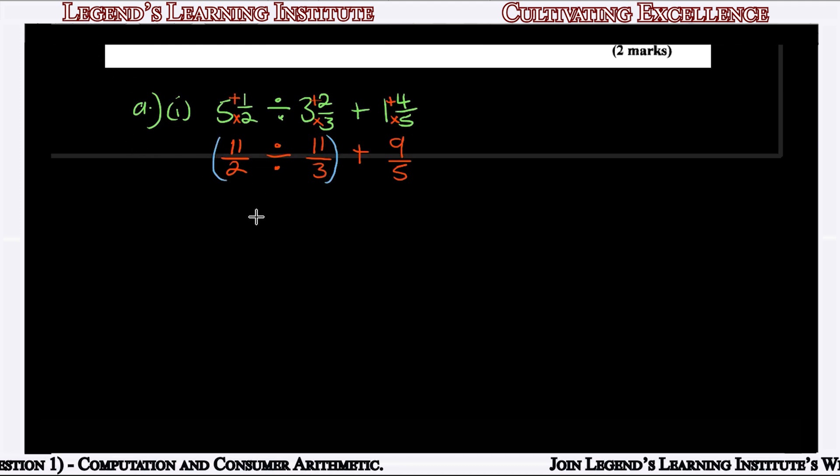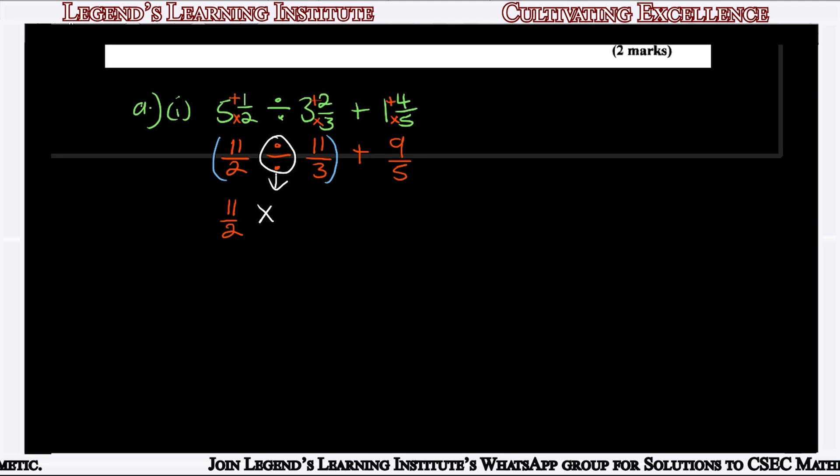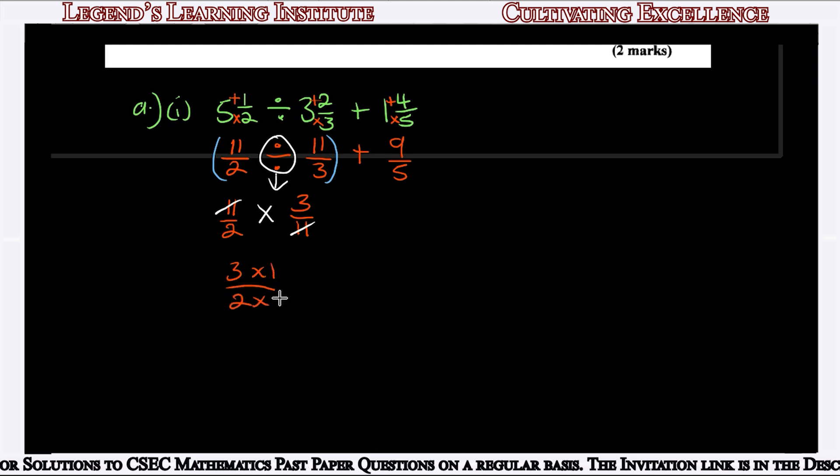Following the order of operations BODMAS, we divide before we add, so we start with 11/2 divided by 11/3. When dividing fractions, change the division sign to multiplication and flip the second fraction. So we get 11/2 multiplied by 3/11. Cross cancelling, the 11s cancel out, giving us 3 times 1 over 2 times 1, which is 3/2.